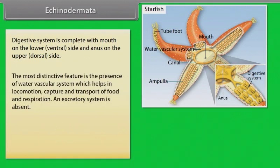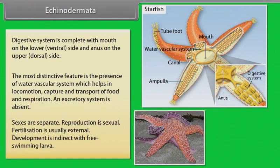The most distinctive feature is the presence of a water vascular system, which helps in locomotion, capture and transport of food, and respiration. An excretory system is absent. Sexes are separate and reproduction is sexual. Fertilization is usually external. Development is indirect with free-swimming larvae.